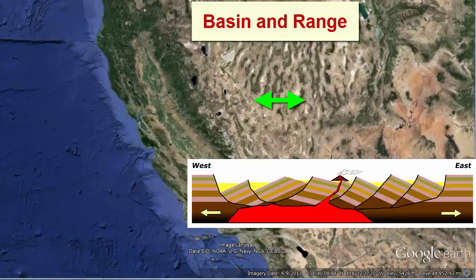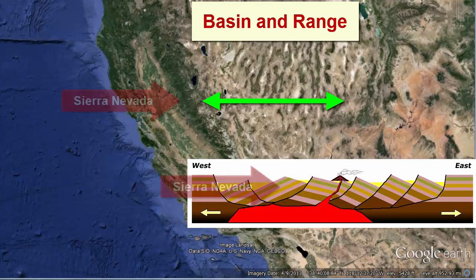The crustal stretching has created subparallel mountains and valleys, collectively known as the Basin and Range. Along the westernmost edge, the Sierra Nevada mountains are being pulled up out of the ground, causing high rates of erosion and exposure of deep granite rock bodies — the now frozen remnants of the magma chambers that used to feed the active subduction volcanoes.